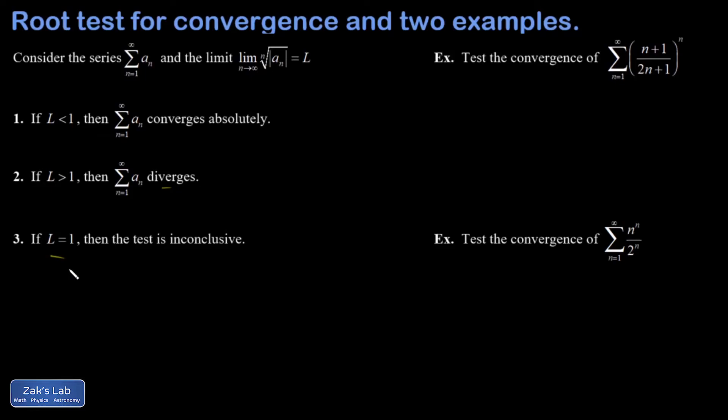Now, this is very handy for series that have an exponent of n in them because when you take the nth root, it undoes that. So if you run into a series with an exponent of n that's causing you problems, it's probably going to be the root test that gets you out of trouble.